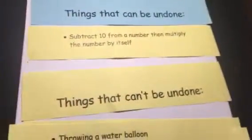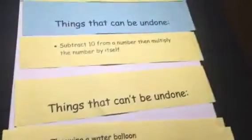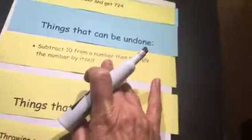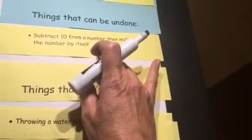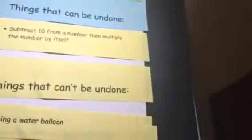When would that not work? If you get a negative number. Let's say we start with 3: 3 minus 10 is negative 7. Negative 7 squared is 49. Then the square root of 49 — wait, do I want positive 7 or negative 7? So that one cannot be undone; it's not like you could back everything up. I'll say no for that one.